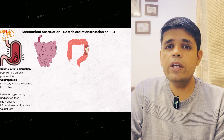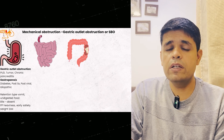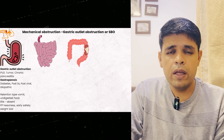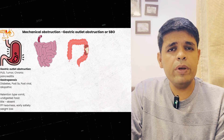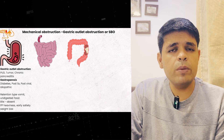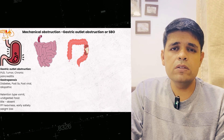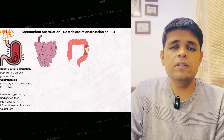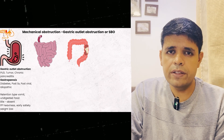Gastroparesis is usually chronic and doesn't cause acute vomiting. For acute vomiting because of a stomach-related cause, the most common is gastritis.